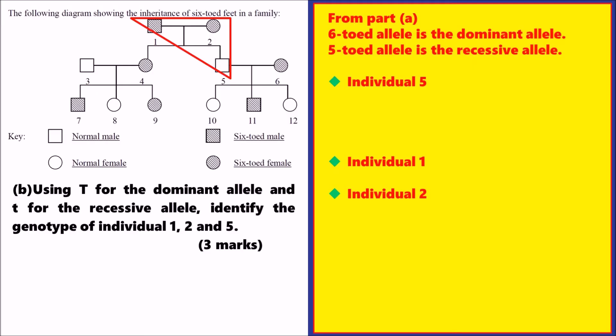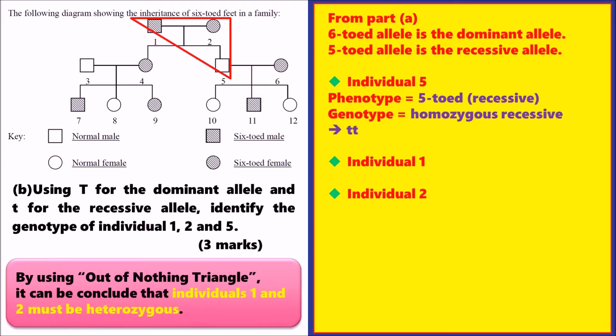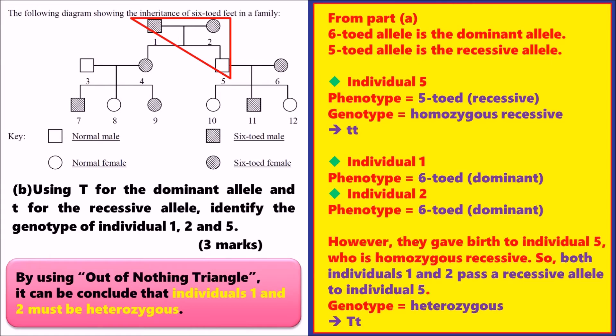For Part B, using capital T for the dominant allele and small t for the recessive allele, we identify the genotype of individuals 1, 2, and 5. From Part A, the 6-toed allele is dominant and the 5-toed allele is recessive. Therefore, individual 5, who is 5-toed, must be homozygous recessive — small t, small t. Since individuals 1 and 2 are 6-toed and both passed the 5-toed allele to individual 5, both are heterozygous — capital T and small t.